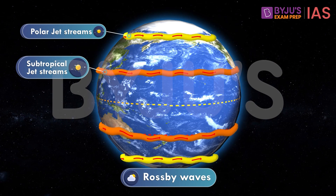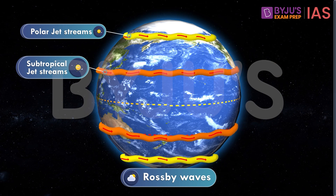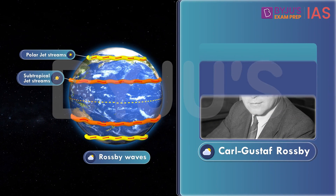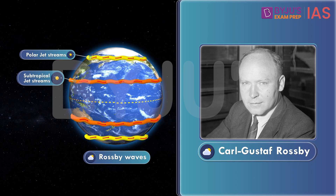These meandering waves are also referred to as Rossby waves. They are named after Carl-Gustaf Rossby, a Swedish-born American meteorologist who first explained the large-scale motions of the atmosphere in terms of fluid mechanics.